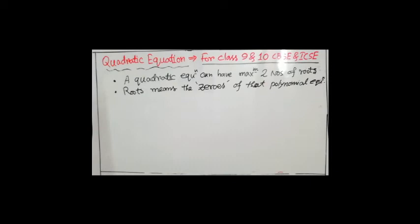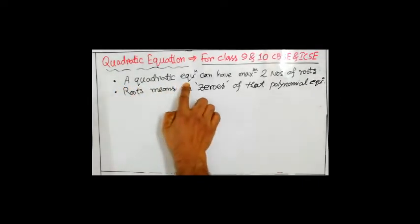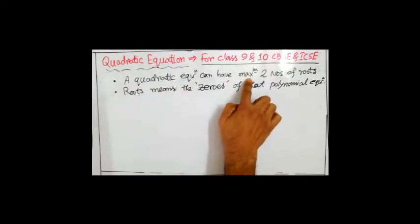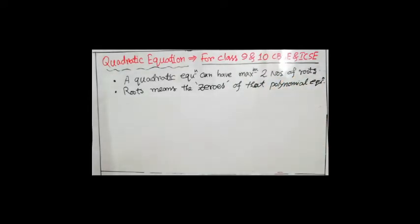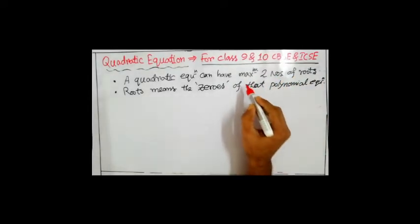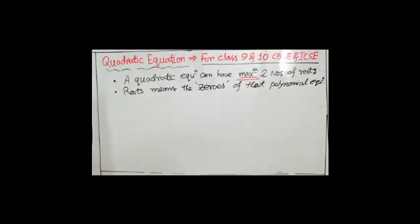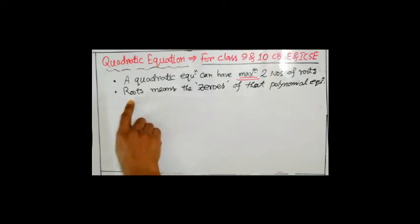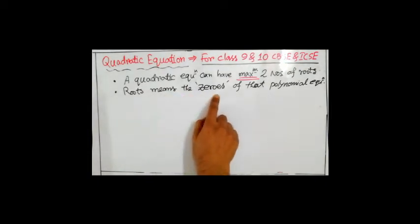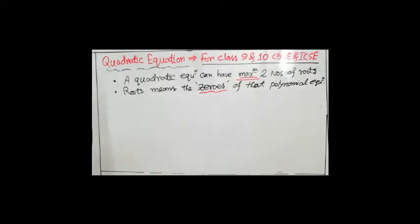From solving that problem, we can draw two conclusions. First, a quadratic equation can have maximum two numbers of roots — it can have only one root, but maximum two, not more than that. Second, roots mean the zeros of that polynomial equation — zeros and roots are basically the same thing.